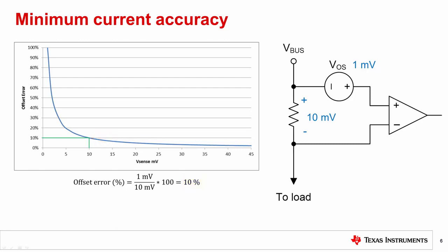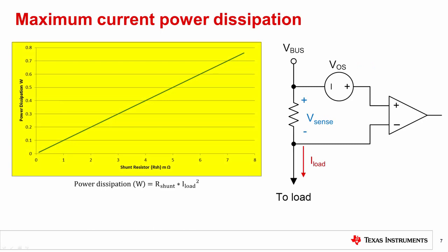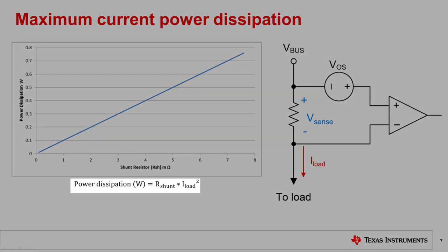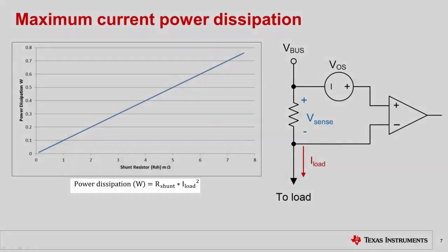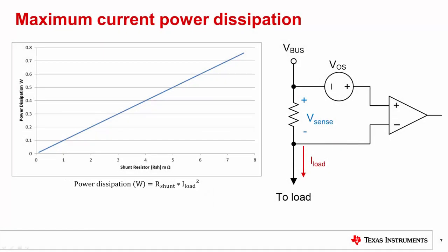Now that we understand the dominant constraint at minimum current is due to V_OS errors, let's consider what happens at maximum current. On the left is a plot of power dissipation versus shunt resistance for a fixed load current. Power dissipation in the shunt resistor is the product of voltage across it and current flowing through it, or the product of the shunt resistance and square of the current flowing through it. Increasing the value of the current shunt resistor increases the differential voltage developed across the resistor, reducing errors caused by V_OS.